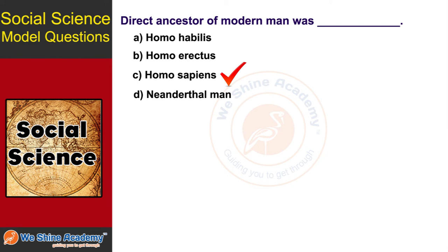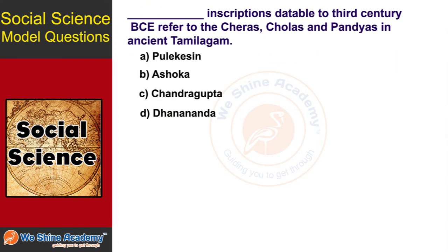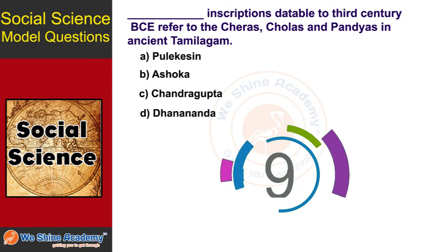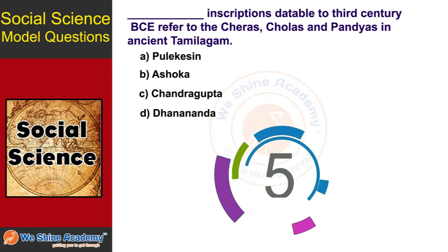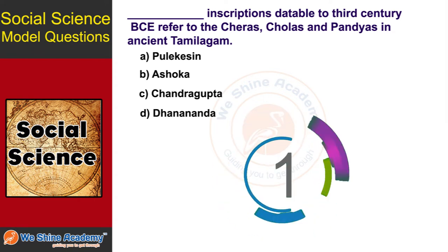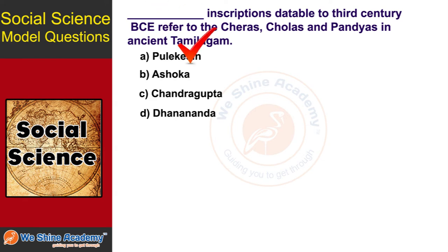The next question is: which inscription, readable to the 3rd century BCE, referred to the Cheras, Cholas, and Pandyas in ancient Tamilakam? You have 10 seconds to find out. The answer is Option B, Ashokan inscription.